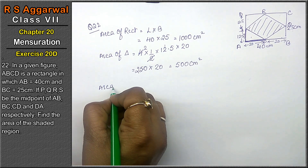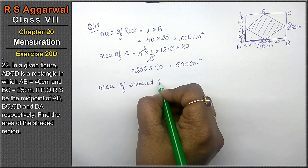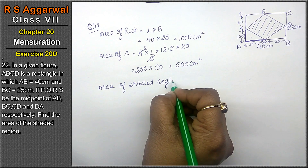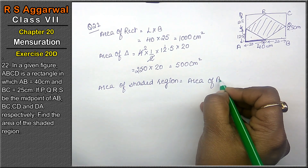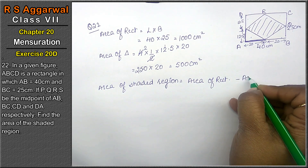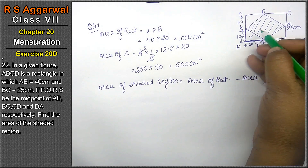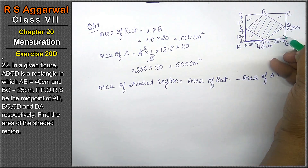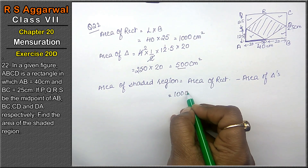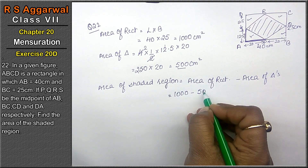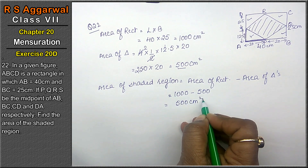Area of shaded region equals area of rectangle minus area of the four triangles. That is 1000 centimeters square minus 500 centimeters square, which gives 500 centimeters square. That is the answer.